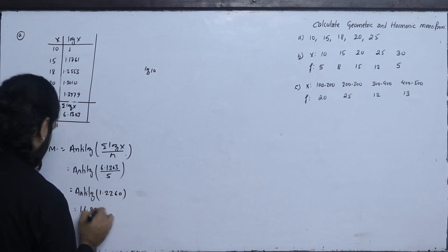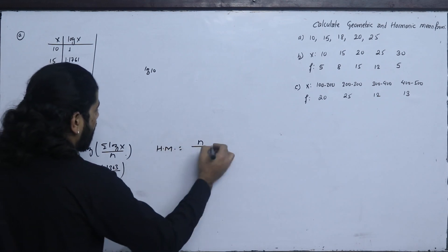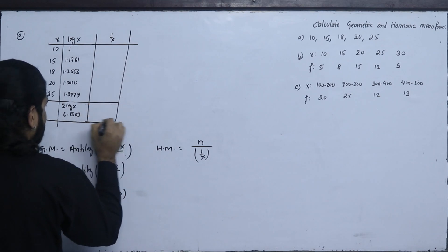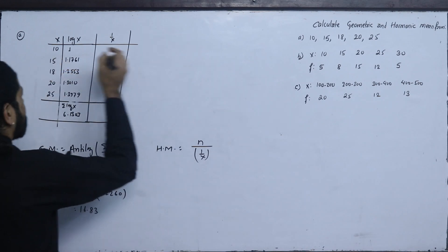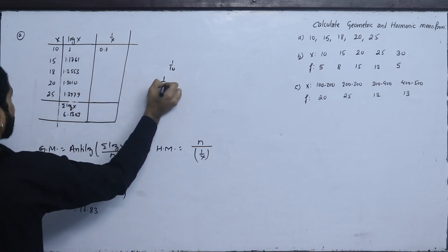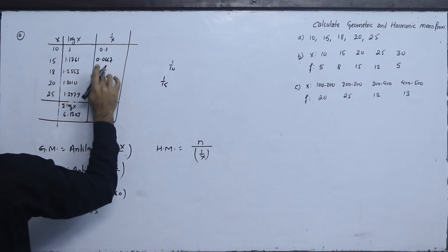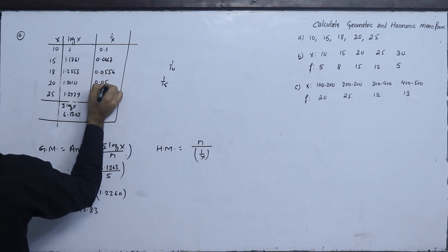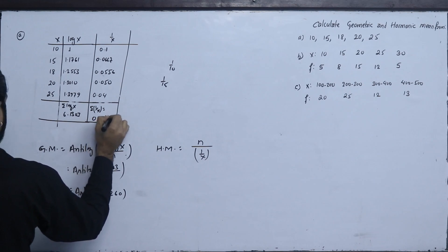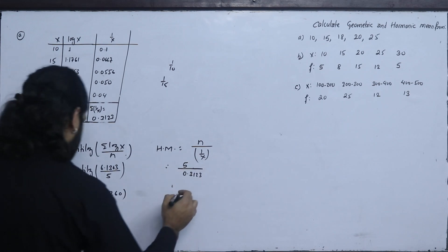For the harmonic mean of the individual series, we calculate 1/x for each value: 1/10 = 0.10, 1/15 = 0.0667, 1/18 = 0.0556, 1/20 = 0.05, and 1/25 = 0.04. The summation of 1/x = 0.3123. The harmonic mean equals N upon summation(1/x), which gives approximately 16.01.